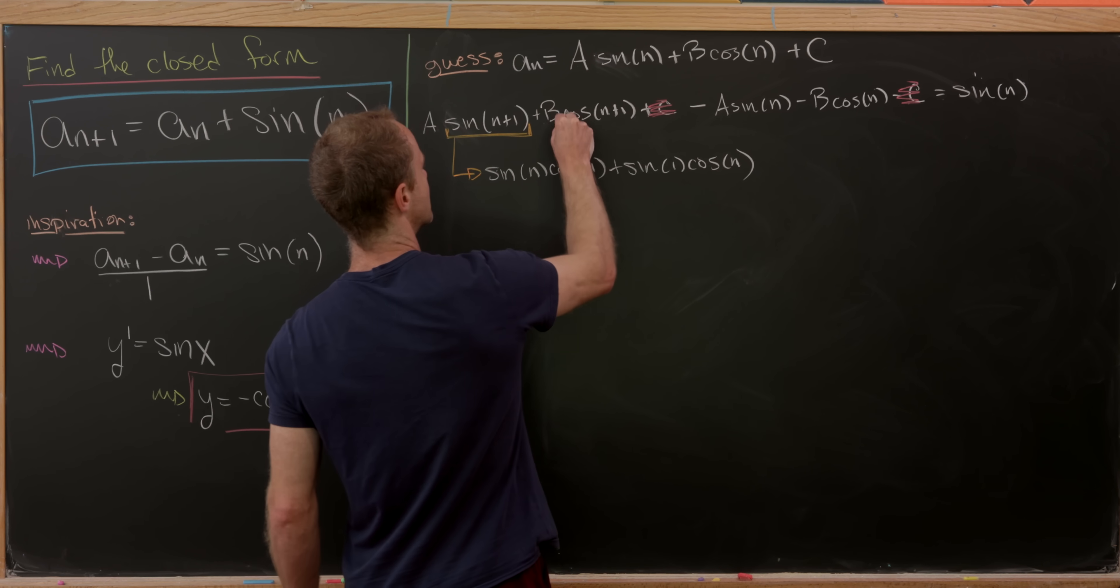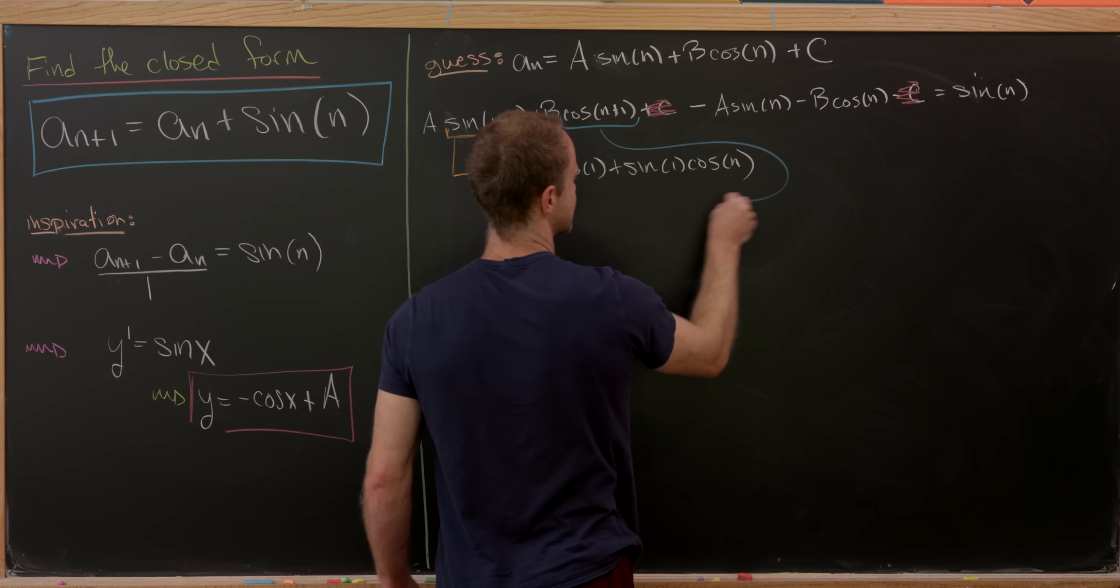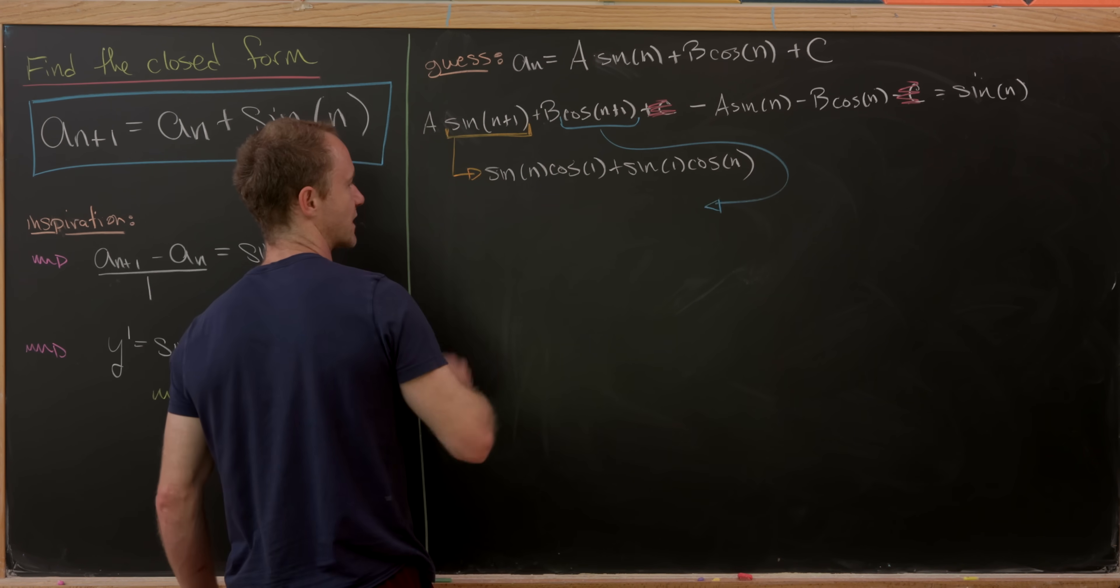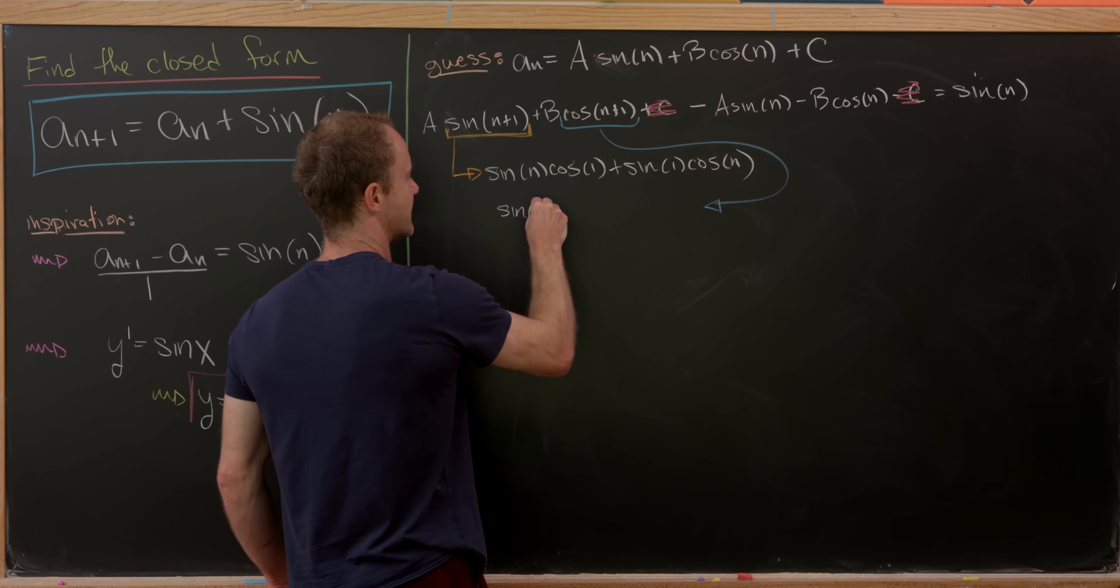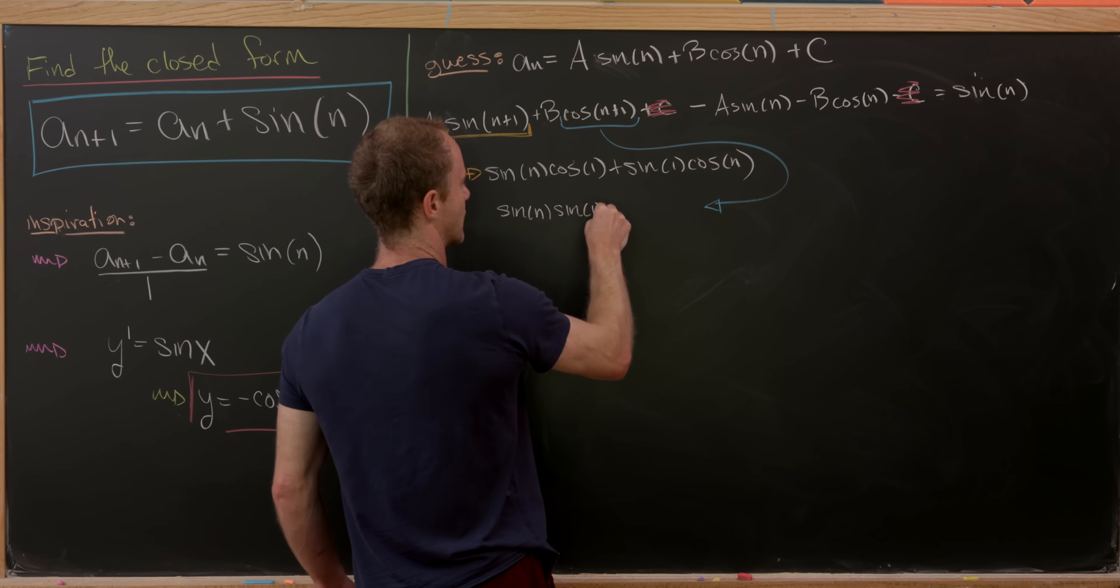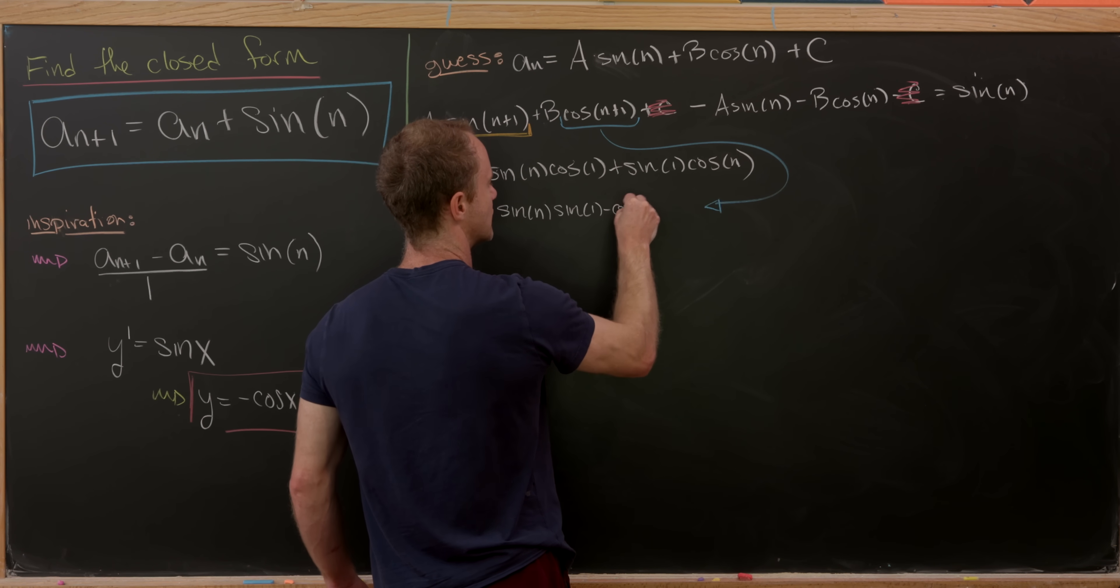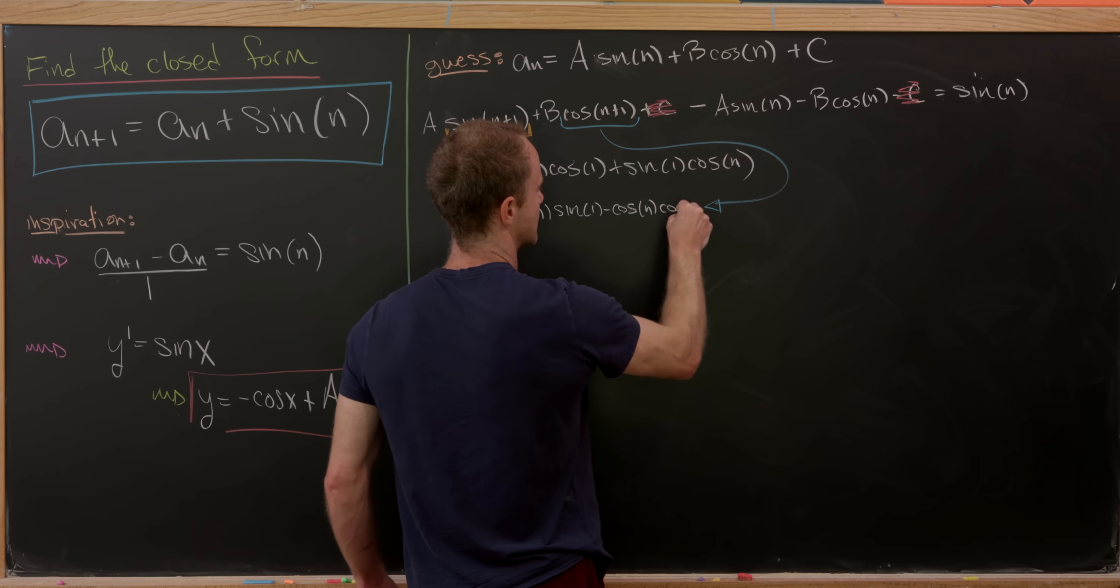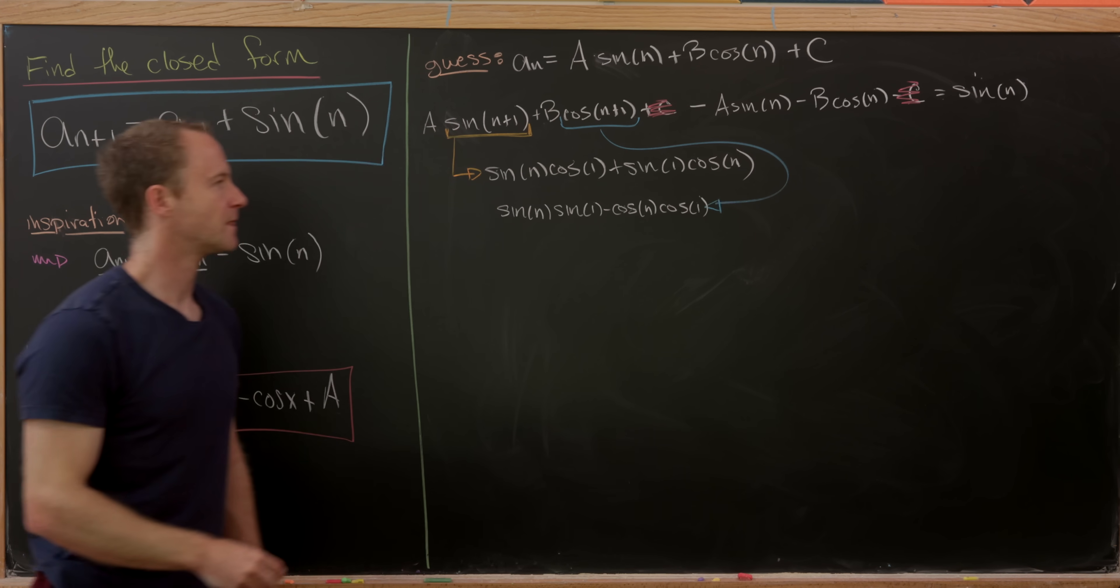But there's also one for cosine, and that's also pretty nice. So what would that leave us with? It would be sine of n times sine of 1 minus cosine of n times cosine of 1.